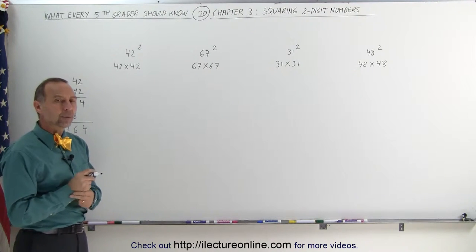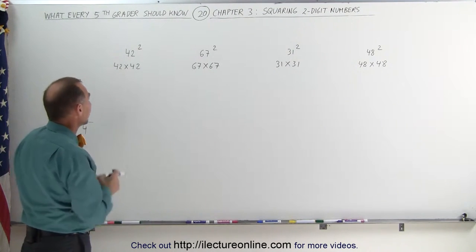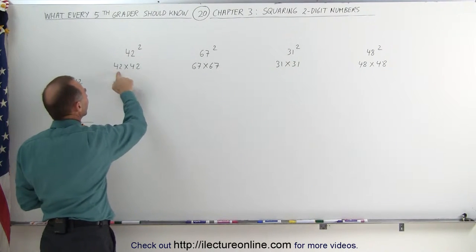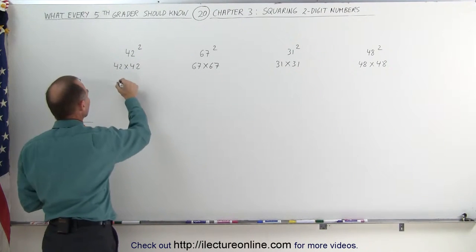But can you do that in your head? Well, one of the ways to start doing that in your head is to follow the following technique. First, you multiply the first two numbers together. 40 times 40, that's like 4 times 4, and add two zeros, so you get 1,600.